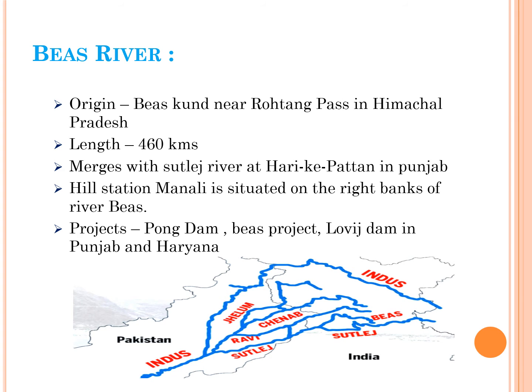Beas river originated in Beaskund near Rohtang Pass in the state of Himachal Pradesh and is 460 kilometers in length. This Beas river merges with the Sutlej river at Harike Patan in Punjab. It is the only river which both originates in India and merges in India — all remaining rivers merge in Pakistan. The famous hill station Manali is situated on the right bank of the Beas river. Important projects on the Beas river are Pong Dam, Beas Project and Lowat Dam in the states of Punjab and Haryana.